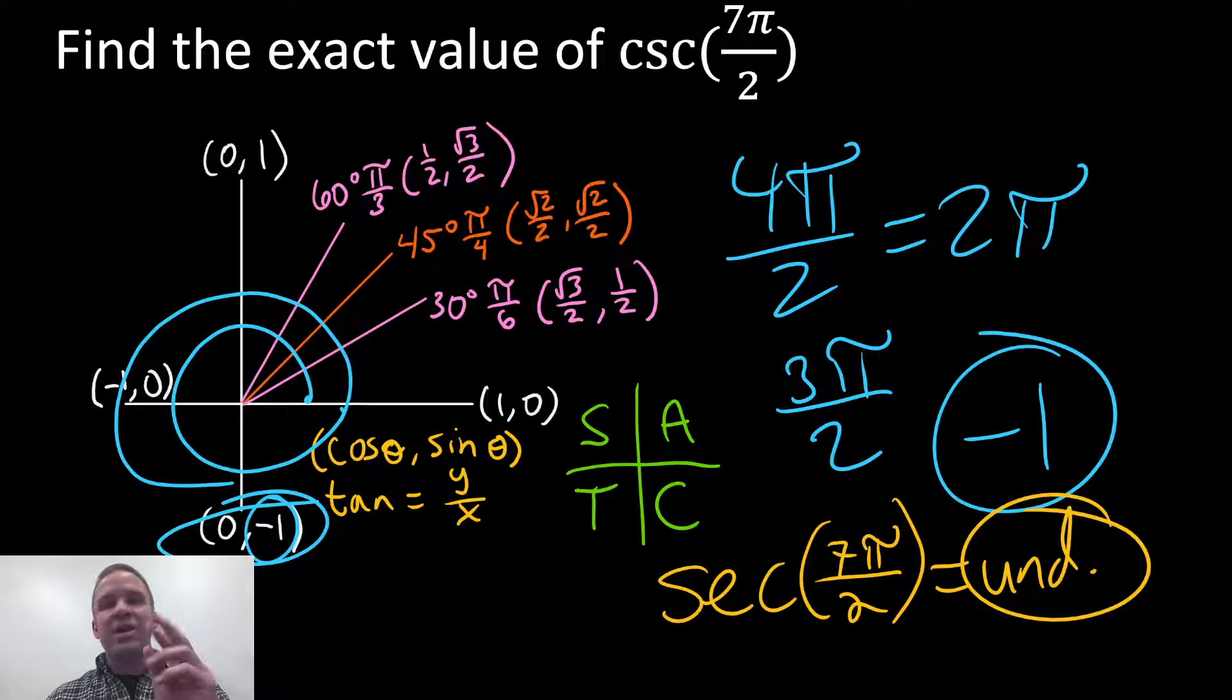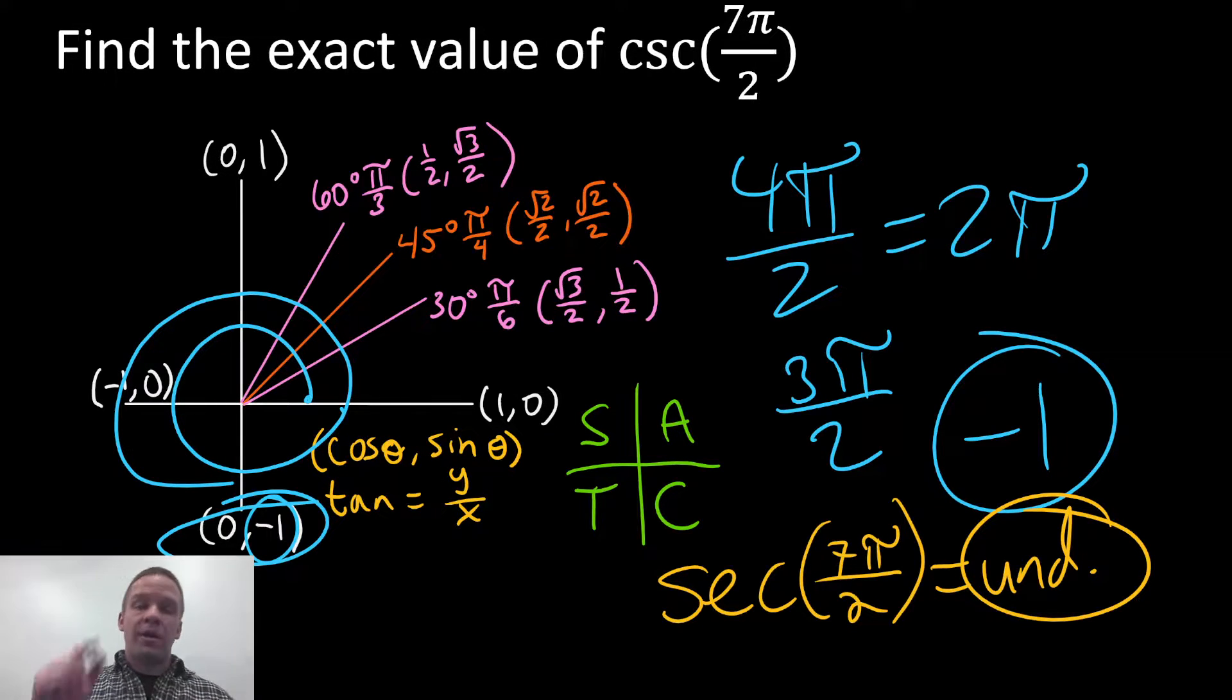So depending on which one you get, you gotta be careful with that. Sometimes it just is what it is, right? Because the reciprocal of one is one. The reciprocal of negative one is negative one. But if it's zero and you try to reciprocal that bad boy, now it's undefined, you know what I'm saying? But don't worry. I'm looking out for you. All right, see you.